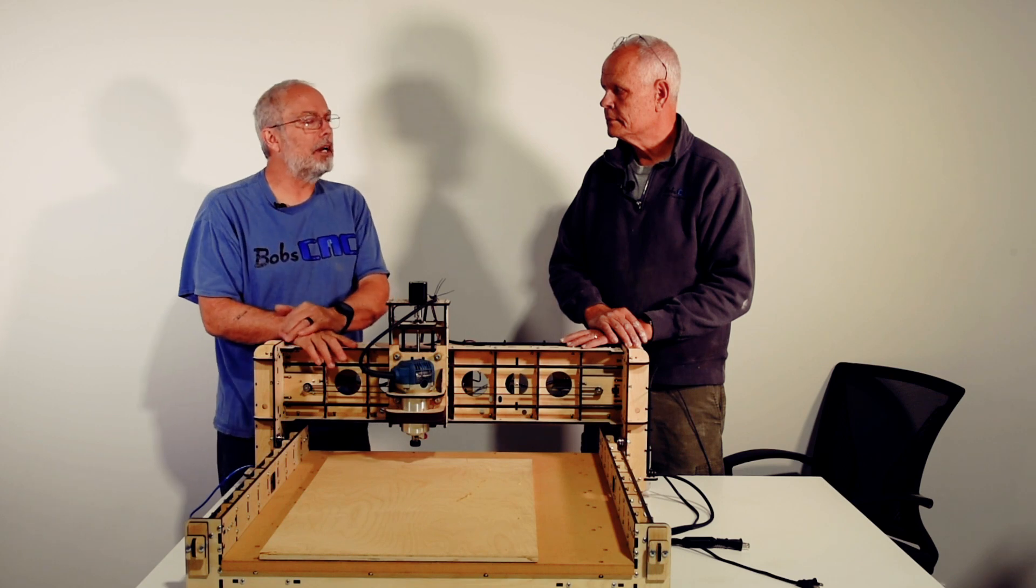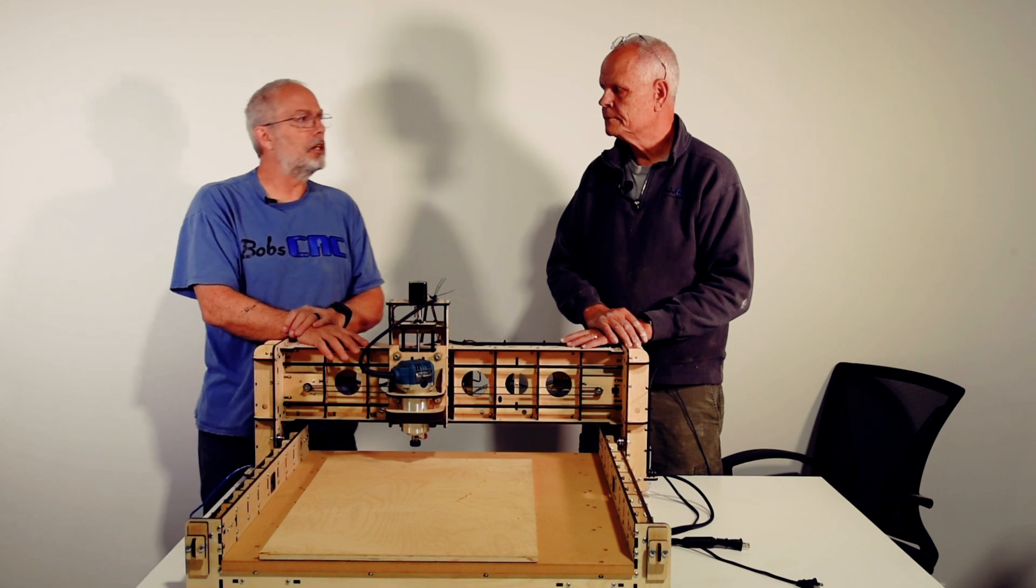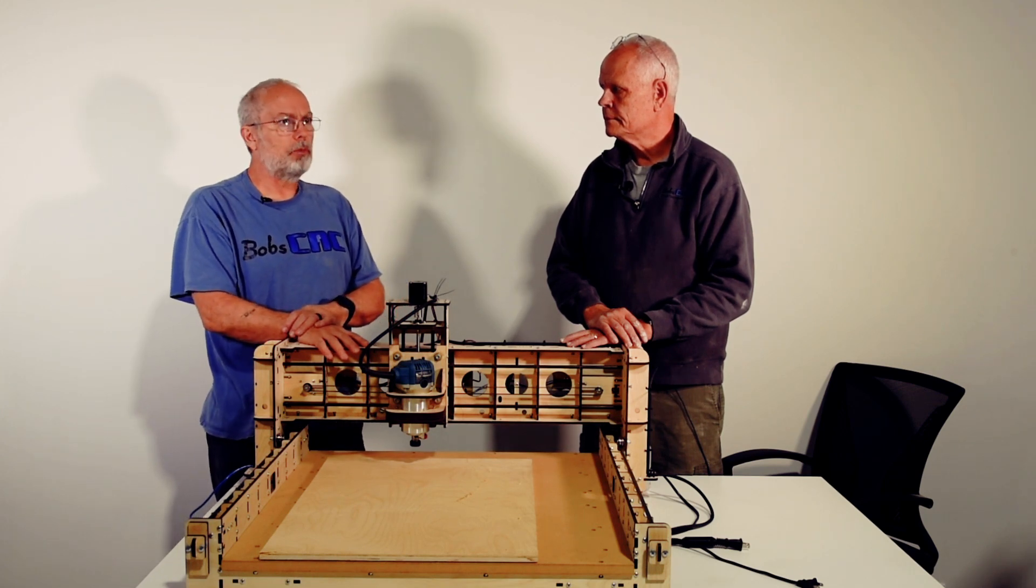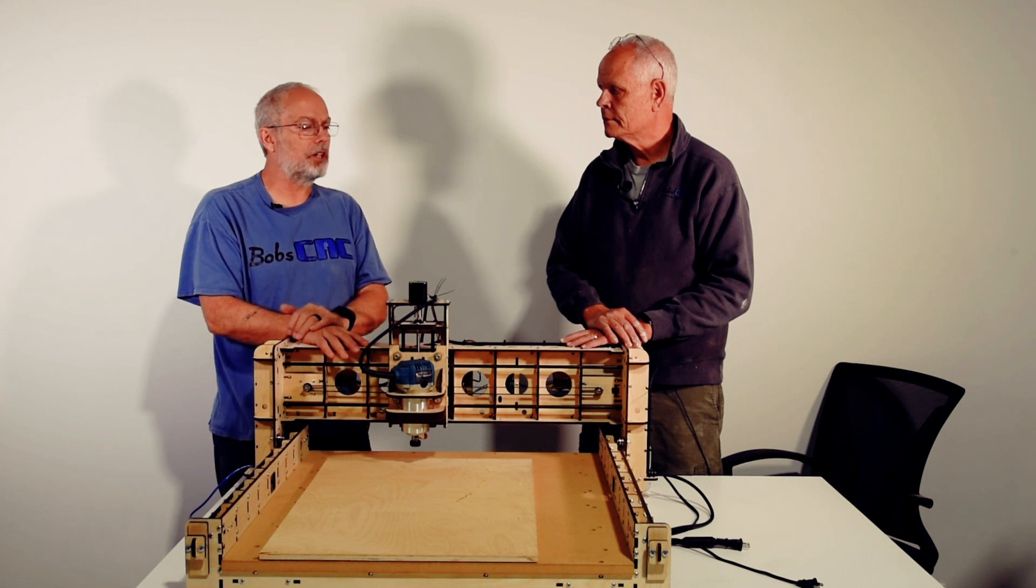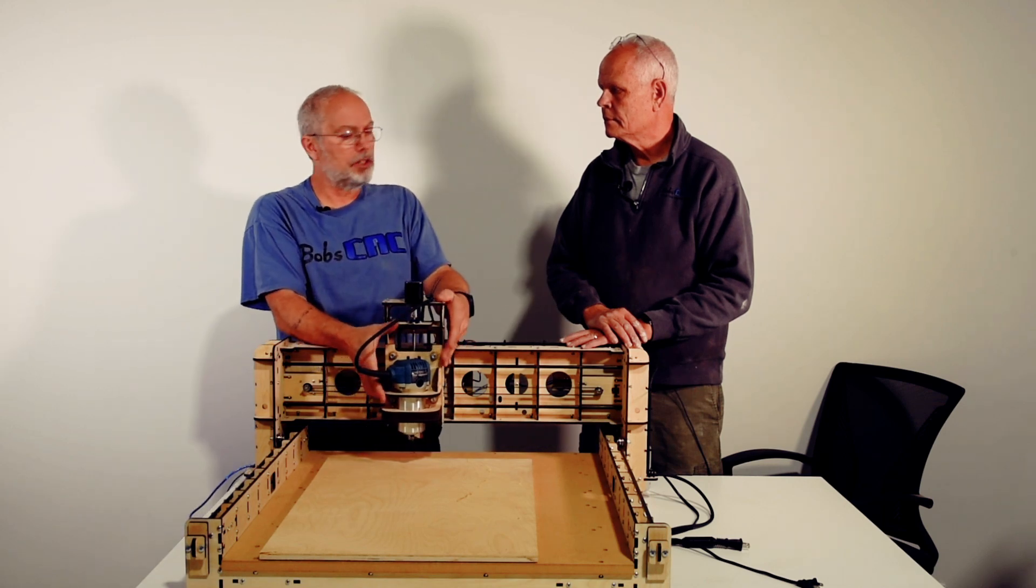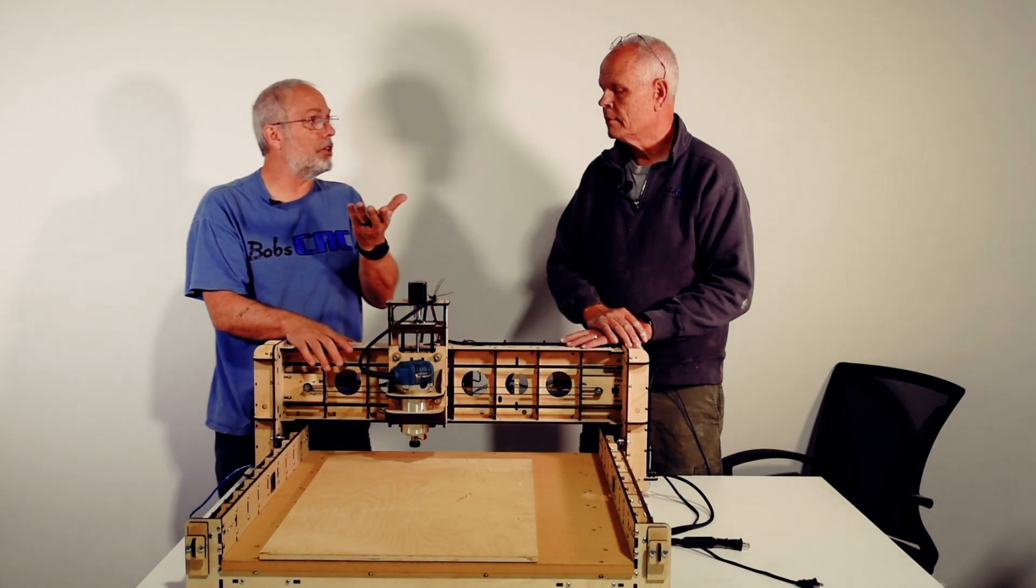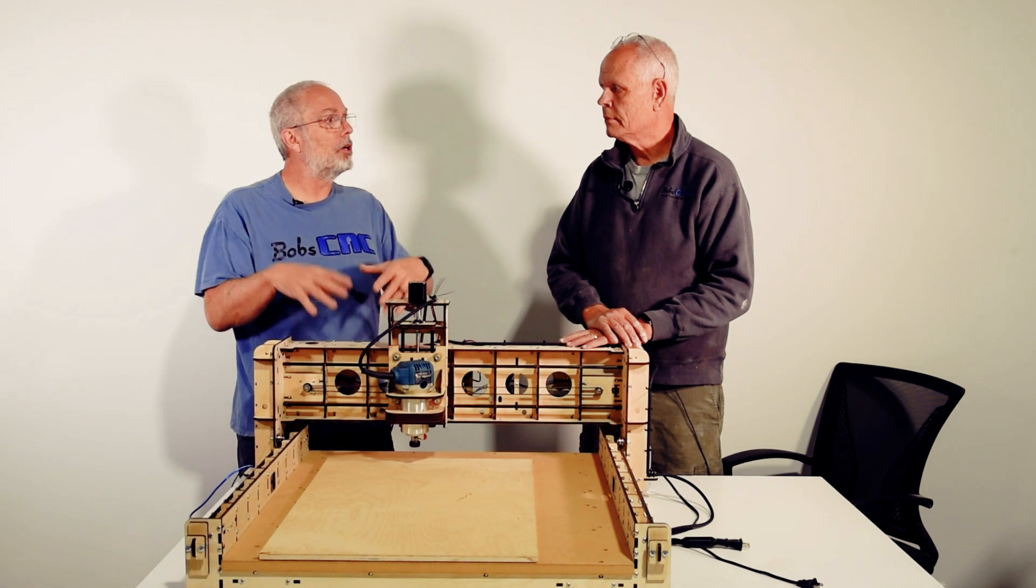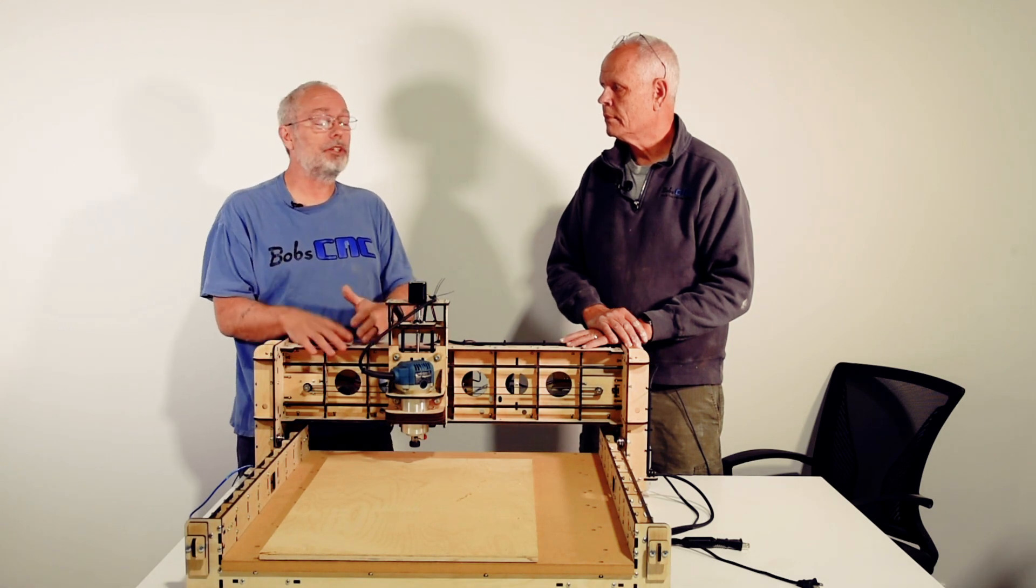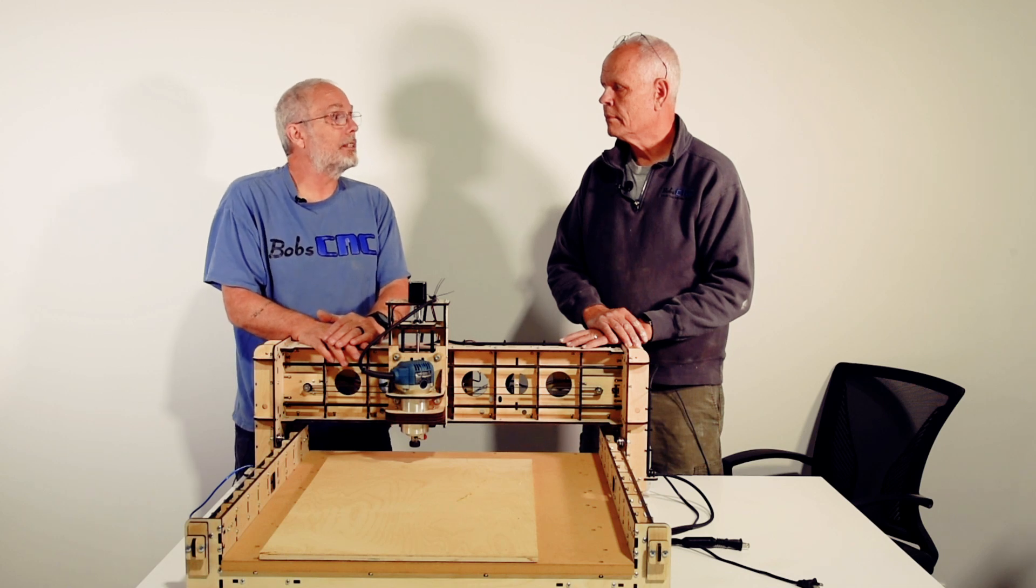Same thing though. But here's what happens a lot of times, especially for folks that are brand new to this, they home the machine, they clamp their wood, open the file and they hit play. The first thing that the G-code file is going to do is try to raise up the Z. Right. But if your Z is all the way at the top, it can't raise any further. Yep. Boom. You get the Alarm 2. My machine doesn't work. Nope. Your machine's working fine. It's telling you, I cannot go up any higher than I am because I'm already at the top.